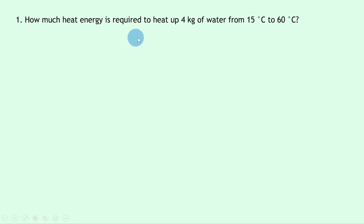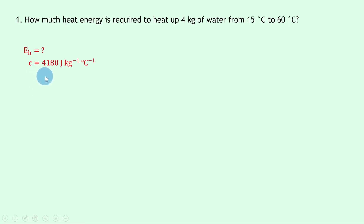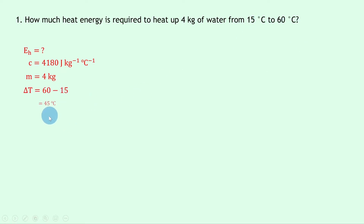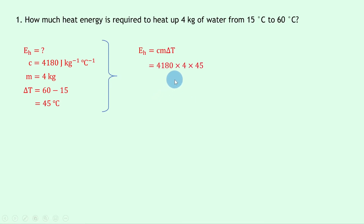Question one says: how much heat energy is required to heat up four kilograms of water from 15°C to 60°C? We're trying to find heat energy E_H. The specific heat capacity c for water is 4,180 J/kg/°C, mass m is 4 kg, and delta T is 60 minus 15, which is 45°C. Using E_H = cm·delta T, substituting gives 4180 × 4 × 45, which equals 7.5 × 10⁵ joules.